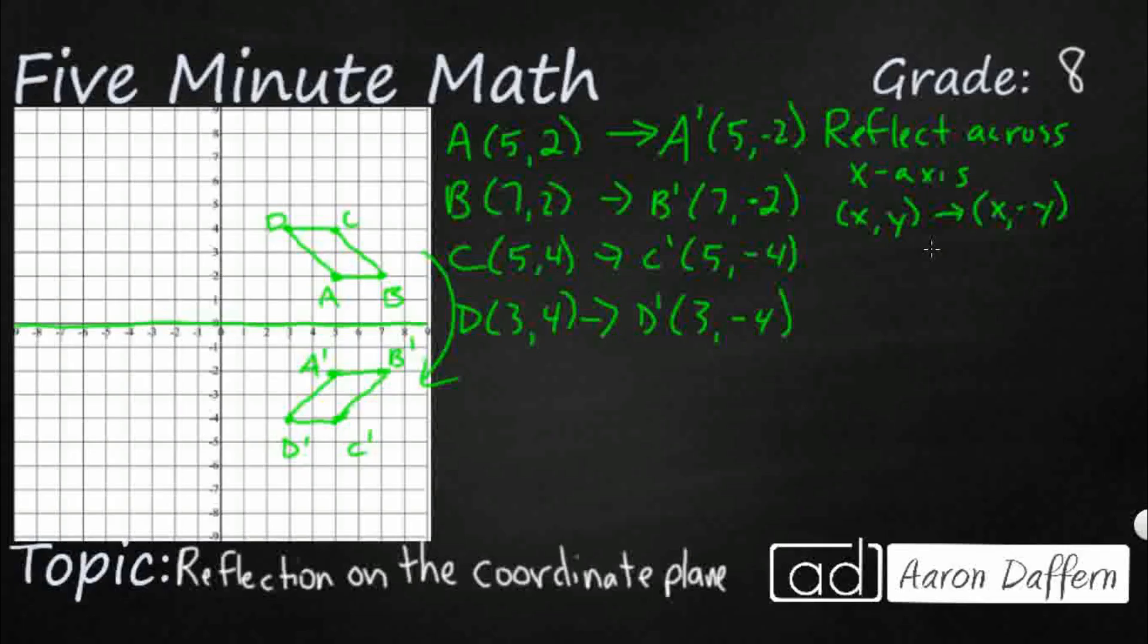So what happens if we want to reflect across the y-axis? Reflect across the y-axis. Well, you probably guessed it. If our transformation across the x-axis simply made us change the y to a negative, well, we're going to do the same with the x-coordinate. We're going to keep our y the same, make the x a negative.